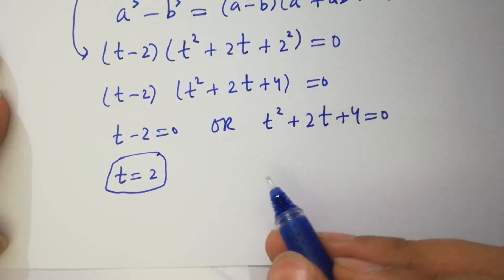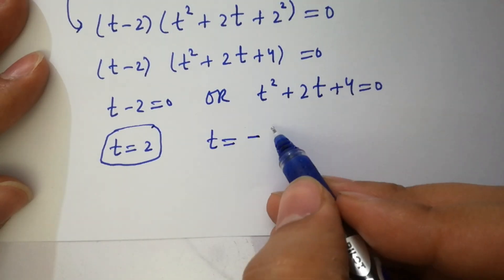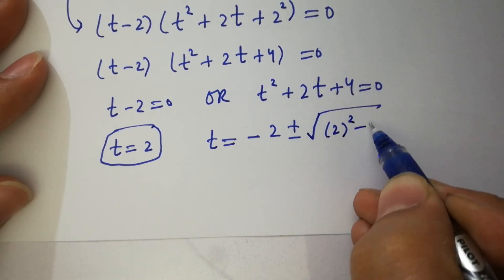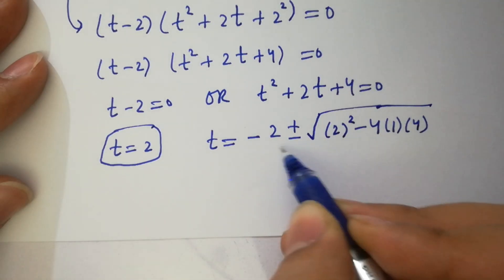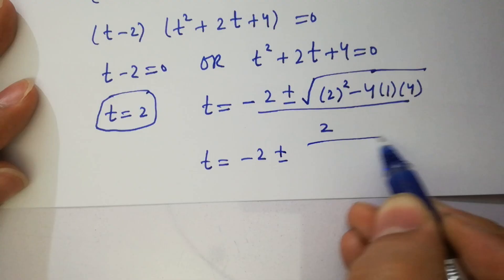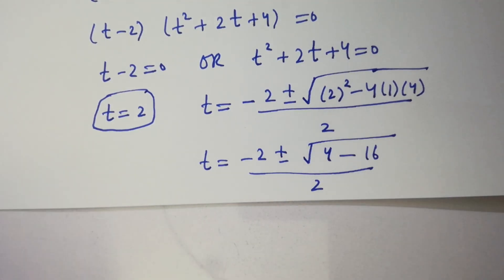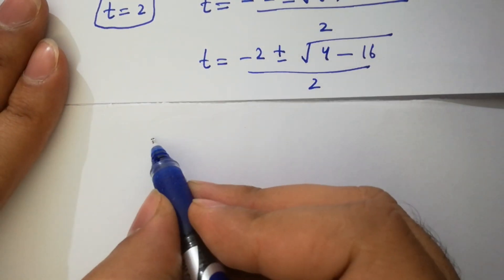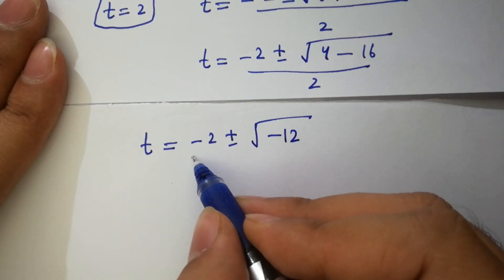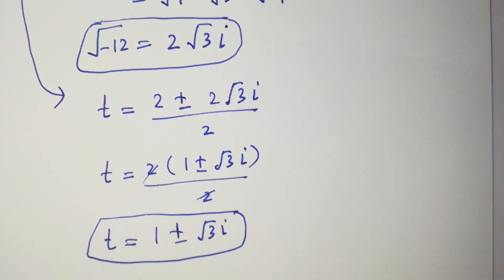Here we have a quadratic equation. Applying the quadratic formula: t equals minus B, which is minus 2, plus or minus square root of B squared minus 4AC, over 2A. With A equals 1, B equals 2, C equals 4: t equals minus 2 plus or minus square root of 4 minus 16, over 2, which is minus 2 plus or minus square root of minus 12, over 2. The square root of minus 12 equals 2 square root of 3 i.